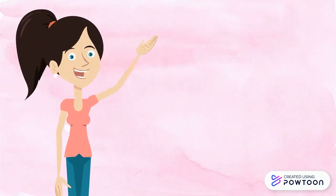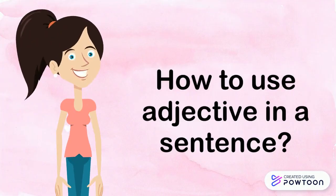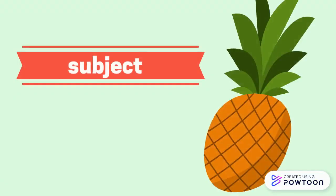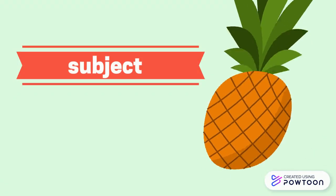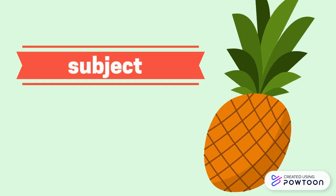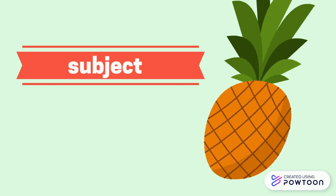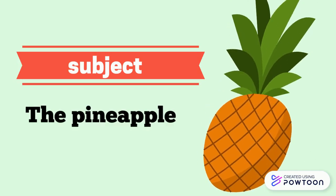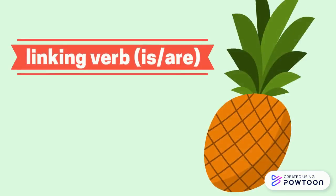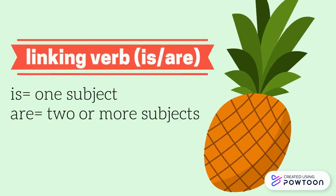How to use adjectives in a sentence. First, write the subject. In this picture, the subject is pineapple. So write: the pineapple, as your subject. Then, identify the appropriate linking verb. Use 'is' if the subject is only one.